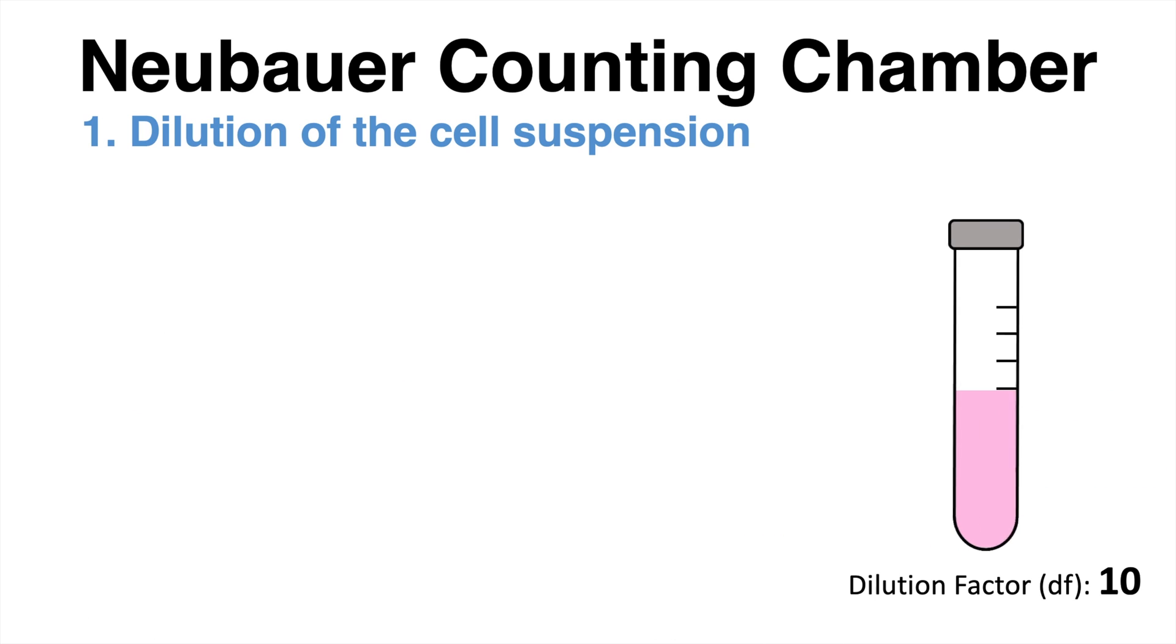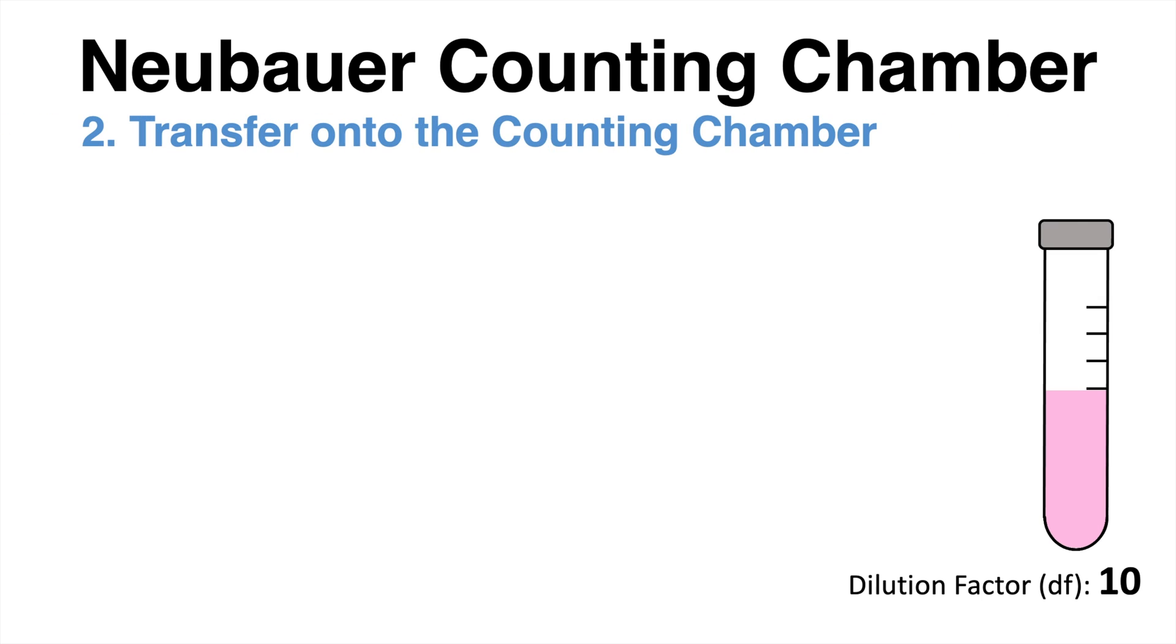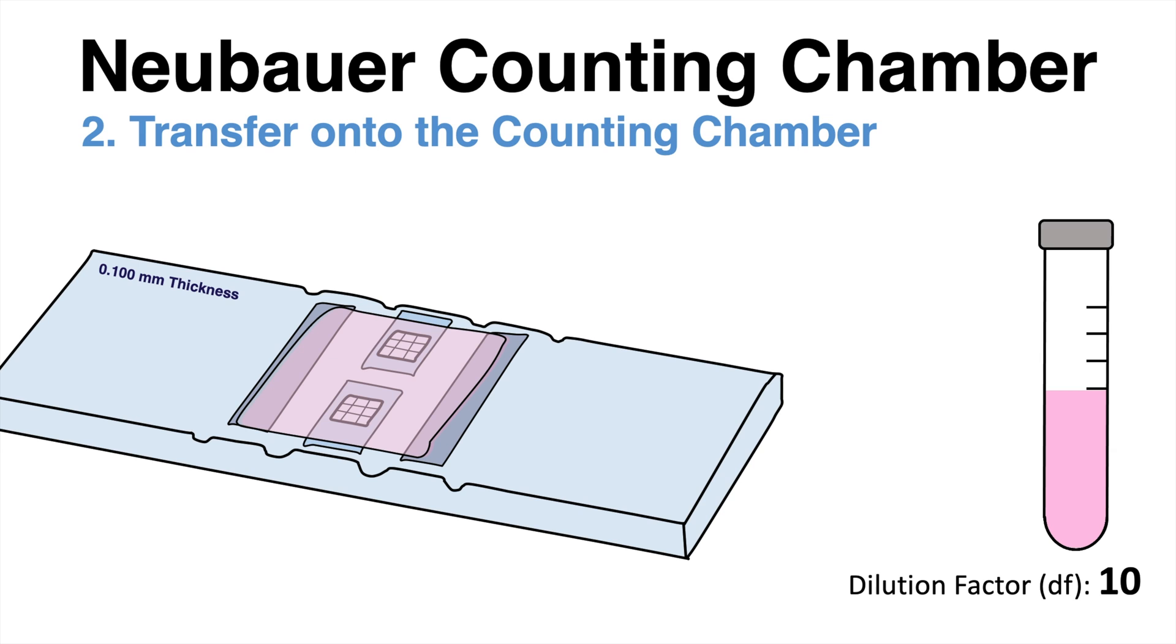The next step is the application of the sample onto the Neubauer counting chamber. Usually the applied volume is 10 µL.